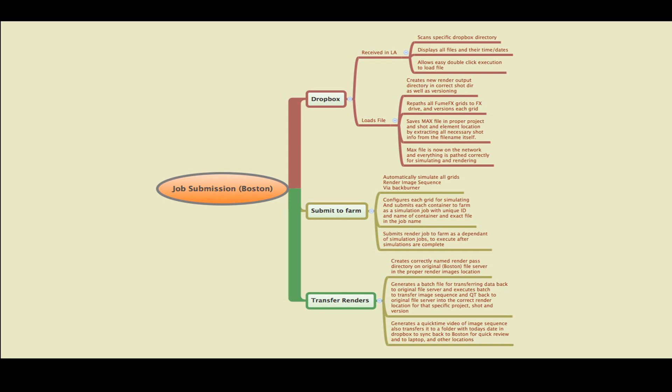So just the general overview: we submit a job, it goes through Dropbox, it's received in LA where it scans the Dropbox directory, displays all the files with times and dates, and allows you to double-click to load. Upon loading, it creates a new render output directory, corrects the shot directory and versioning, repaths all FumeFX grids to the FumeFX drive, versions each grid, and saves the max file to the proper project, shot, and element location by extracting all necessary shot info from the file itself. Max is now on the network, everything is pathed correctly for simulating and rendering.